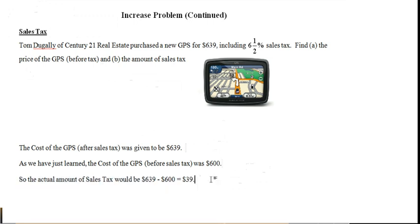So, the actual amount of sales tax would be found by taking $639, the cost of the GPS after sales tax, minus $600, which we now know to be the cost of the GPS before sales tax, leaving us with $39 as the actual amount of sales tax.